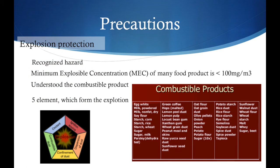There is also a hazard when using the spray dryer. The most common one is dust explosion. The minimum explosible concentration of many food products is less than 100 mg per cubic meter. There are five elements contributing to an explosion: oxidant, ignition source, dispersion of dust, confinement of dust, and combustible dust. Examples of combustible products are egg white, milk, green coffee, potato starch, walnut dust, wheat flour, and many more.